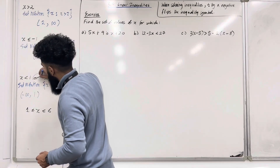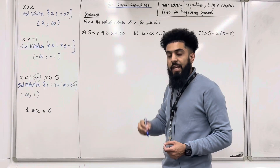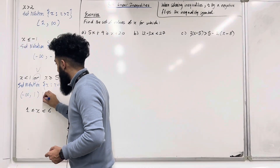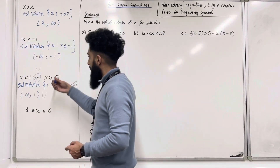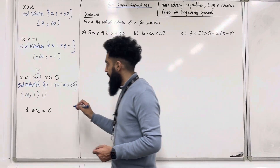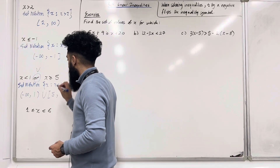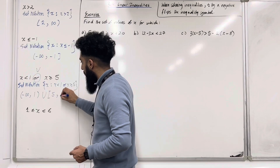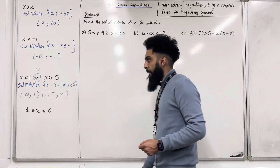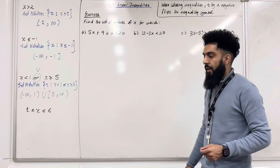The set notation for 'or' is union, so we put a union symbol here. Then we write down X is greater than or equal to 5, giving us: square bracket, 5 comma infinity, close curly bracket. That there is the complete interval notation for this inequality.